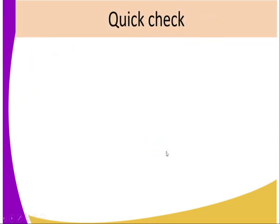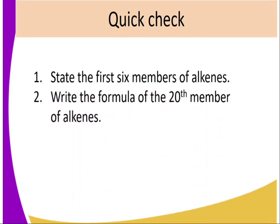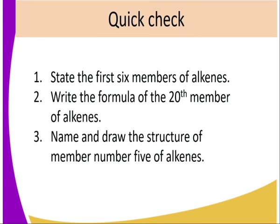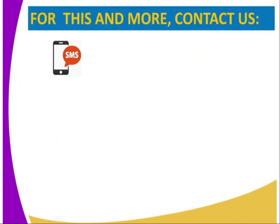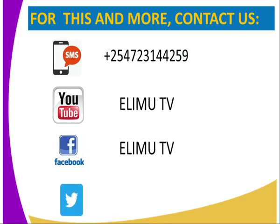Did we achieve the goals of this lesson? We can test ourselves by answering the following questions: state the first six members of Alkenes; write the formula of the 20th member of Alkenes using the general formula; and name and draw the structure of member number 5 of Alkenes. You can refer to the Student Chemistry Book 3, send us a text through the number on your screen, or visit our YouTube or Facebook page at Elimu TV. You can also tweet us at Elimu TV underscore KE. Once again, your teacher Mr. Mwangi Francis — thank you for paying attention.